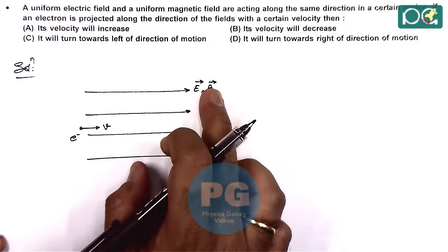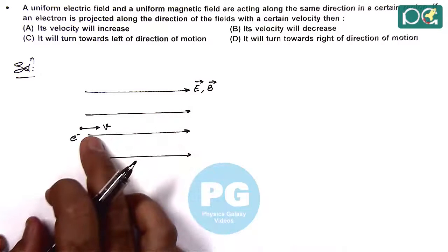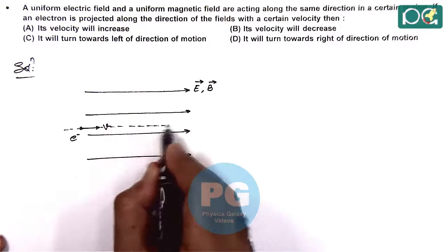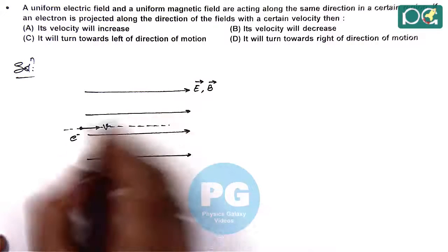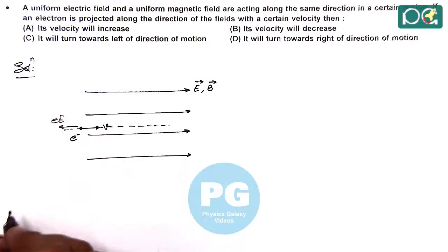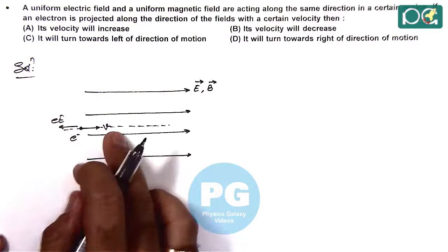Here we can see the magnetic force on this electron will be zero, so it will not change its direction. It will continue to move in the same direction, but due to the electric field it experiences an opposing electric force, due to which the velocity will decrease.